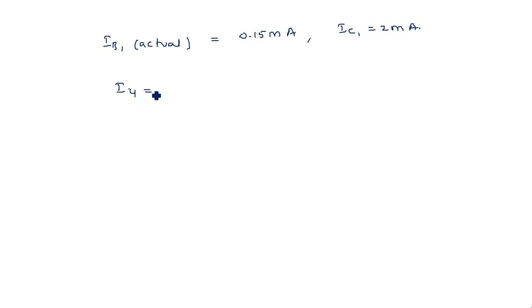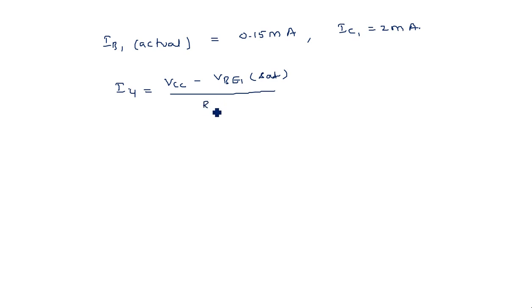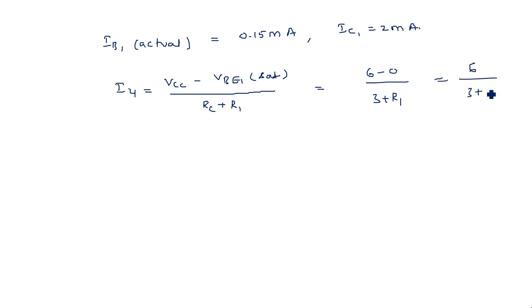Current i4 entering the base node = (VCC − VBE1 sat) / (Rc + R1) = (6 − 0) / (3 + R1) = 6 / (3 + R1) kΩ. Current i5 is the current flowing from the base node through R2 to the VBB supply.